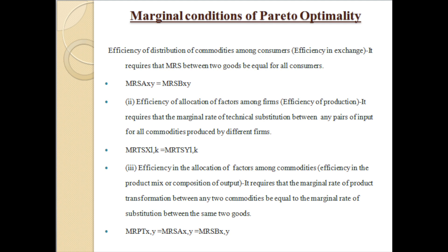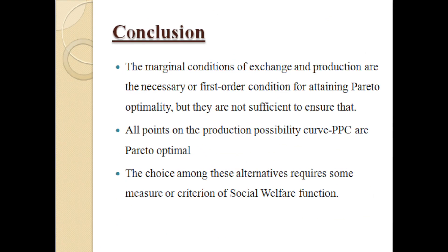A situation may be Pareto optimal without maximization of social welfare. There may be the condition of Pareto optimality but not the maximization of social welfare — this is where Pareto optimality lacks. The marginal conditions of exchange and production are necessary, or first-order, conditions for attaining Pareto optimality, but they are not sufficient to ensure that maximization of social welfare will occur.